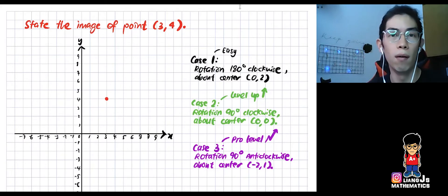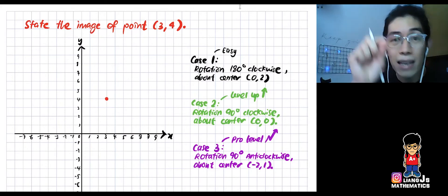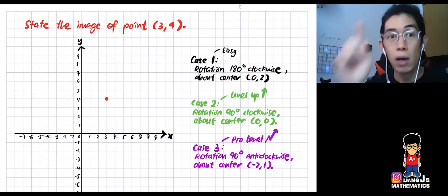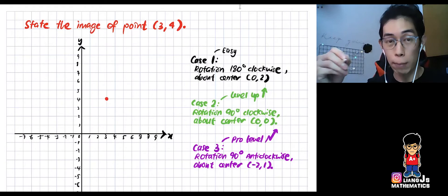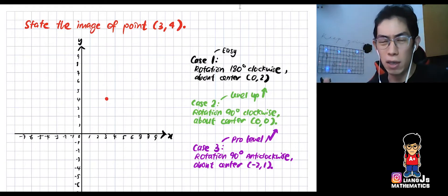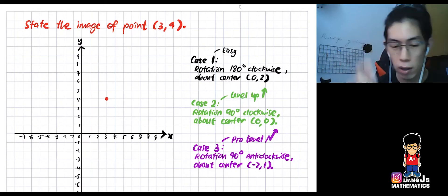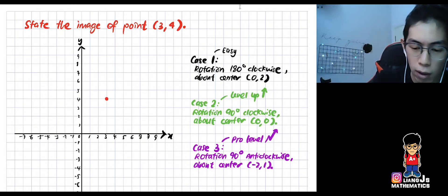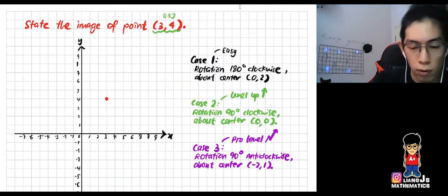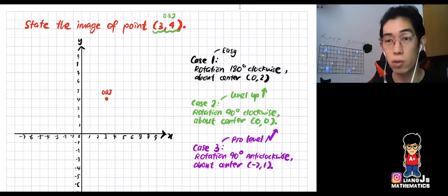When the question says 'state the image,' it means you are writing down the image coordinates. But before you start writing the image, you need to have the object first. So identify the object — that's your starting point.